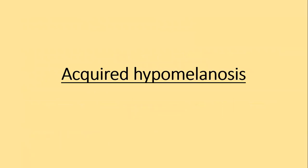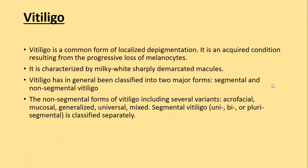We have now come to acquired hypomelanosis — conditions in which there is a decrease in skin color pigmentation that is acquired and not congenital. The most important disease we will cover is vitiligo. Vitiligo is a common form of localized depigmentation — an acquired condition resulting from progressive loss of melanocytes. It is characterized by milky-white, sharply demarcated macules. Vitiligo is classified into two major forms: segmental and non-segmental vitiligo.